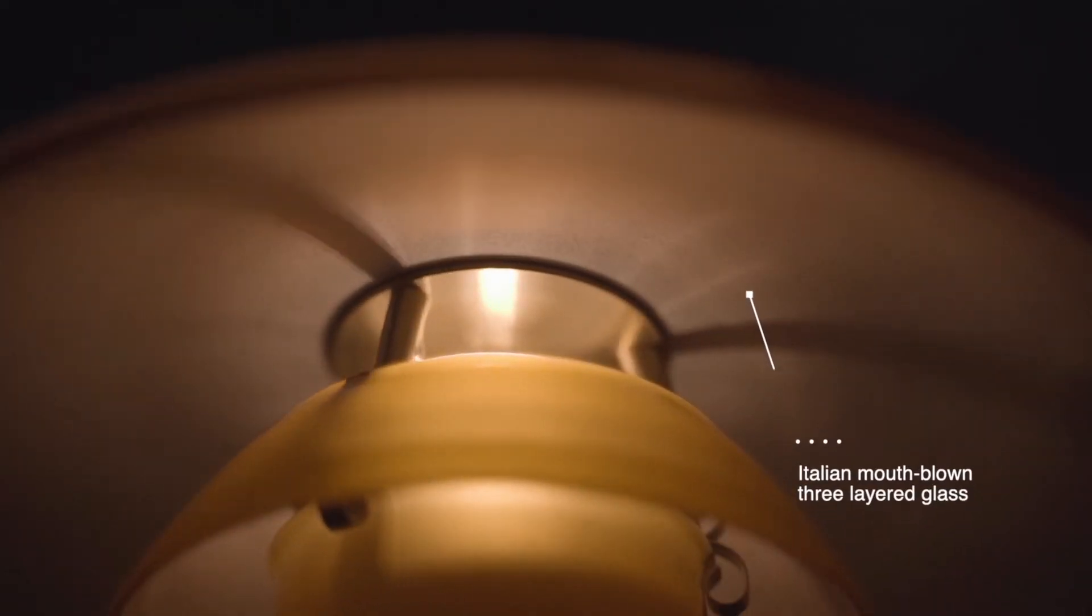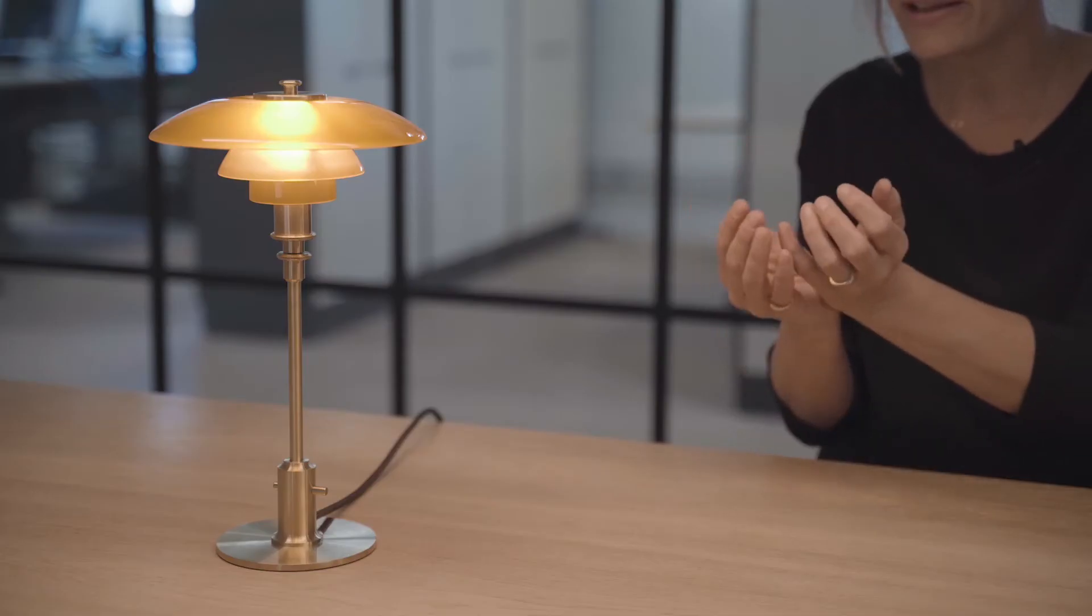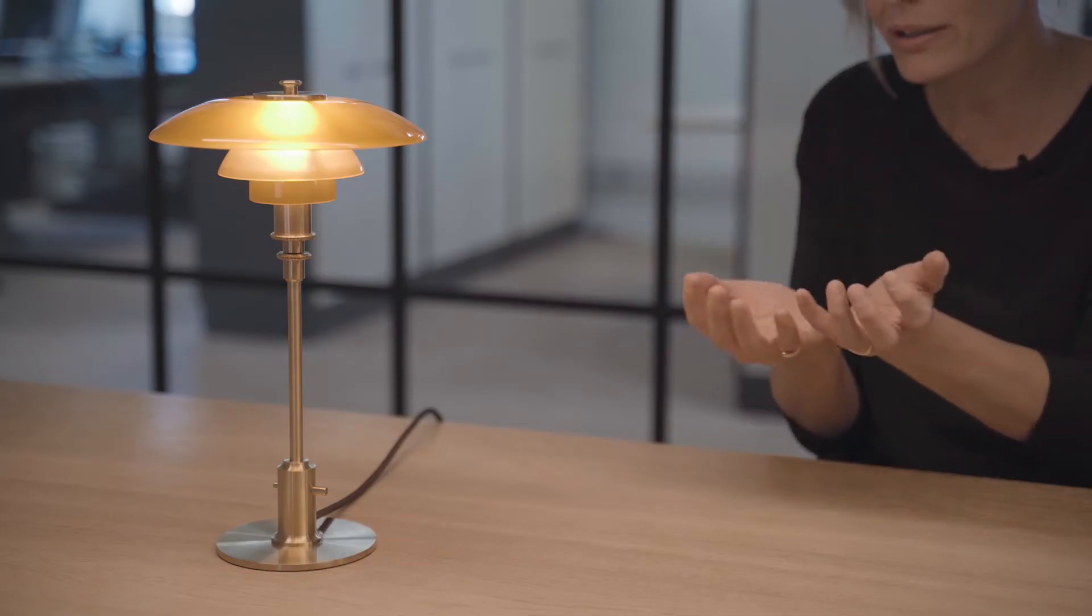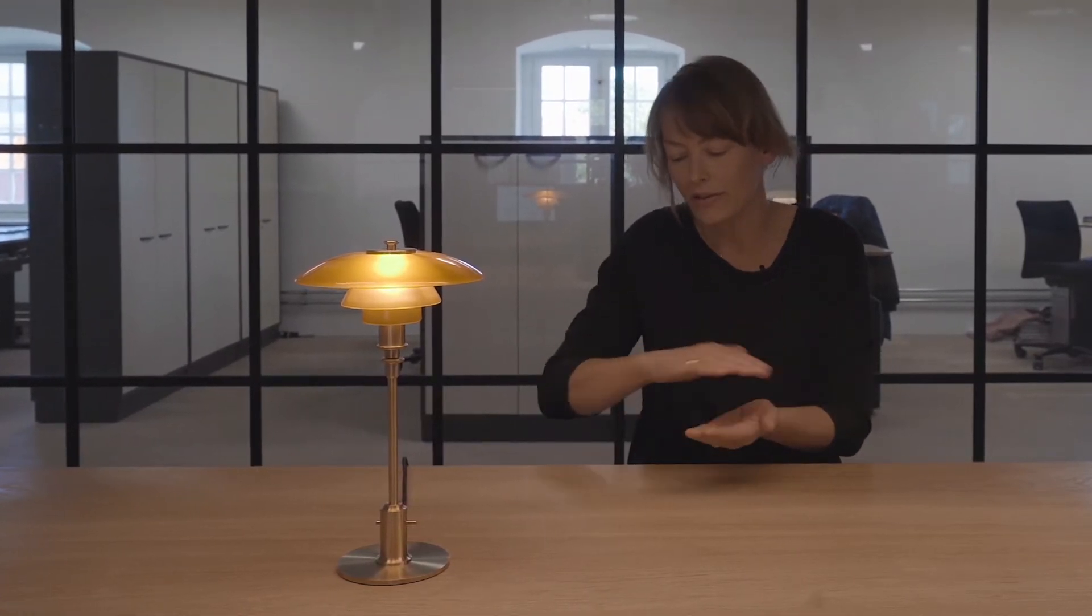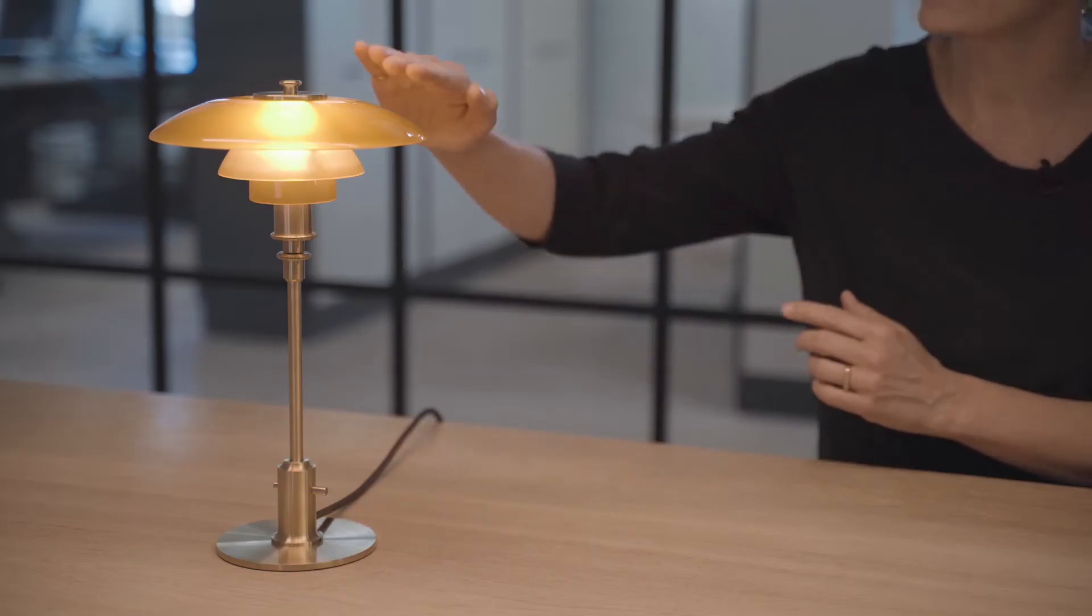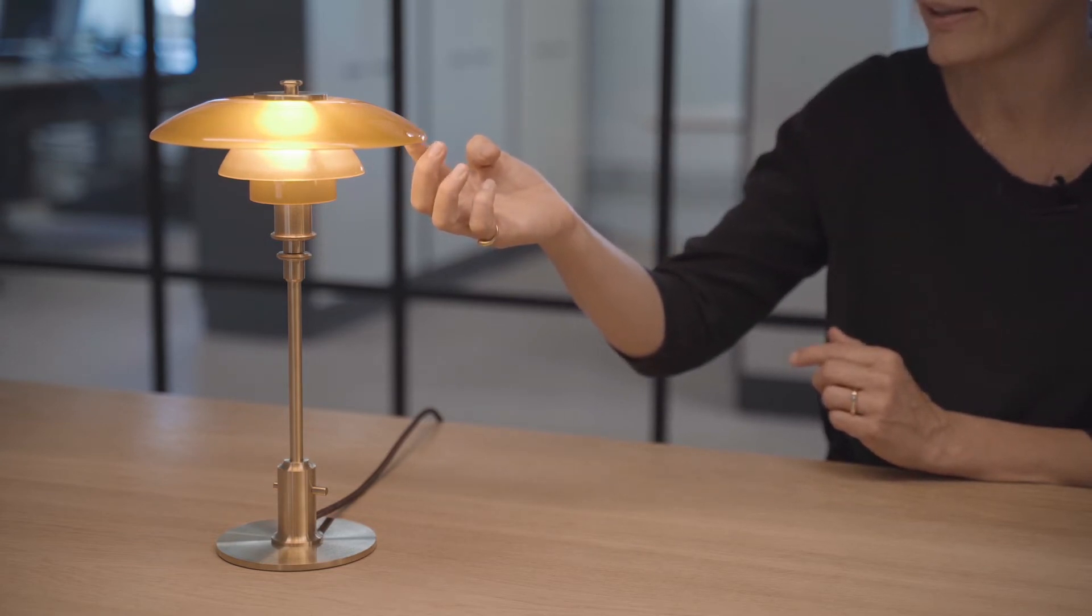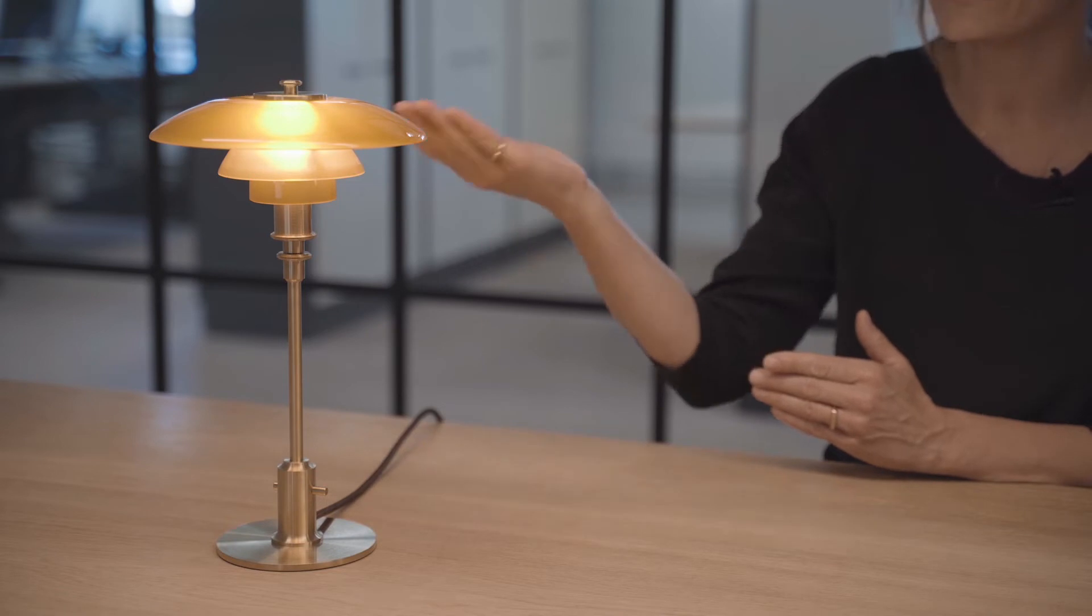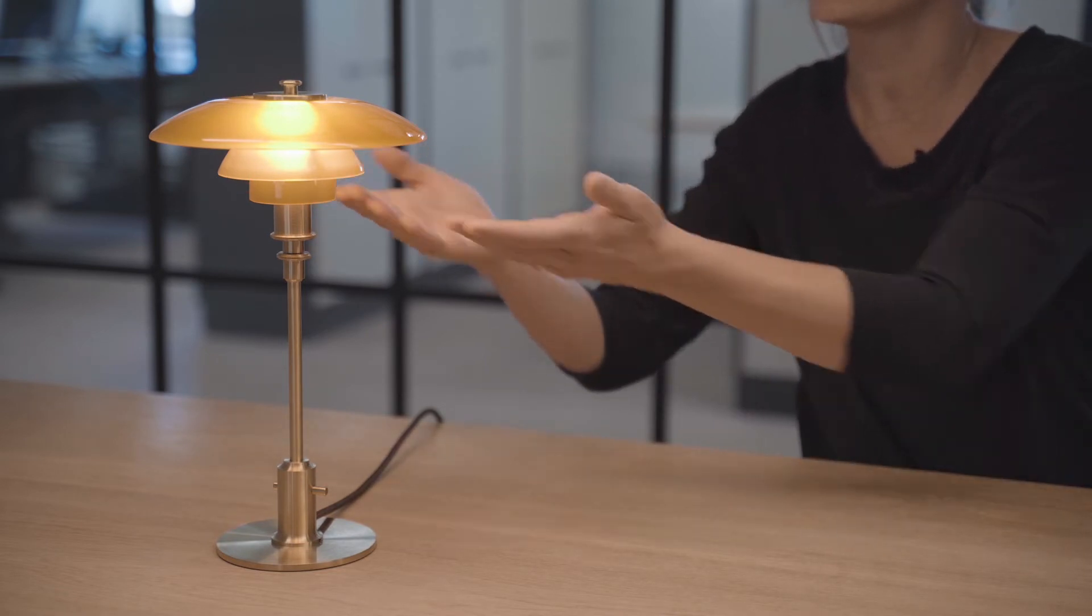The Italian mouth-blown glass is a three-layer glass. It consists of first a clear layer, then an amber-colored layer, and outside again a clear layer. After the mouth blowing of the glass in the form, this shape that is oval round would be cut in two, and you would have two shades. The outside would be clear, in the middle you would have the colored glass, and underneath also clear glass. And that underside is then sandblasted to give this matte reflecting surface.